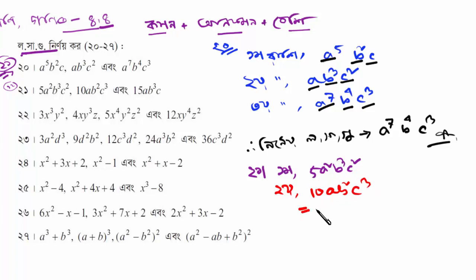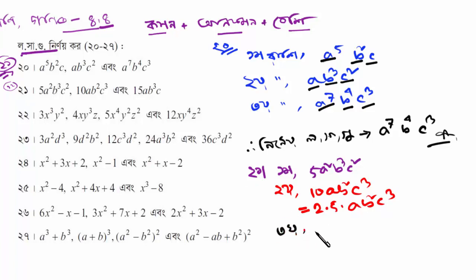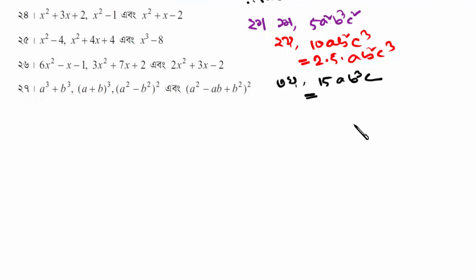Tumi bhaangai te paro 2 into 5, giving 5 a b square c cube. Titi o rashi taya dhafo — titi o rashi kiya se 15 a b cube c. 15 ke bhaangai 3 into 5, so 15 ke bhaangai is 3 into 5, giving a b cube c.